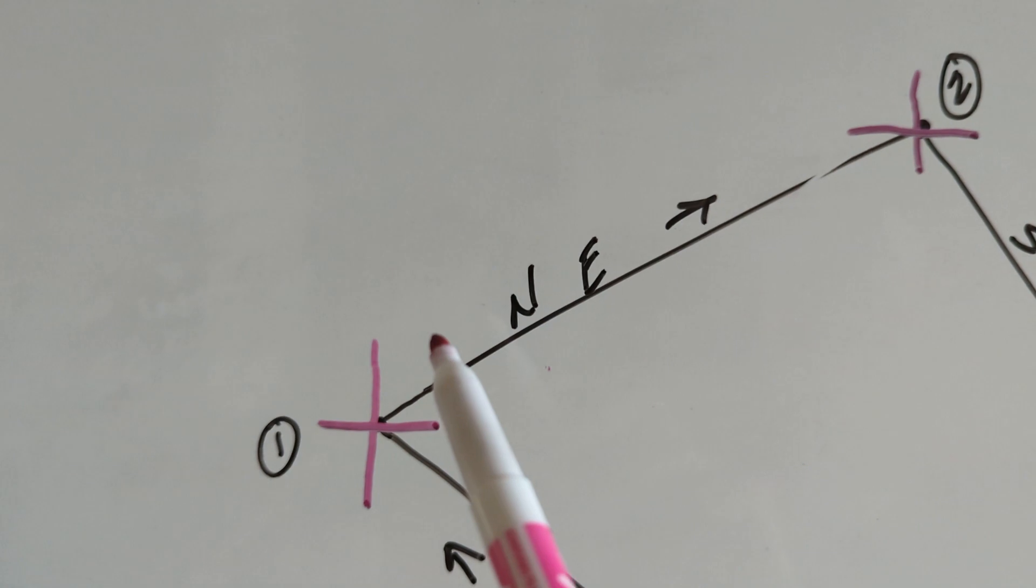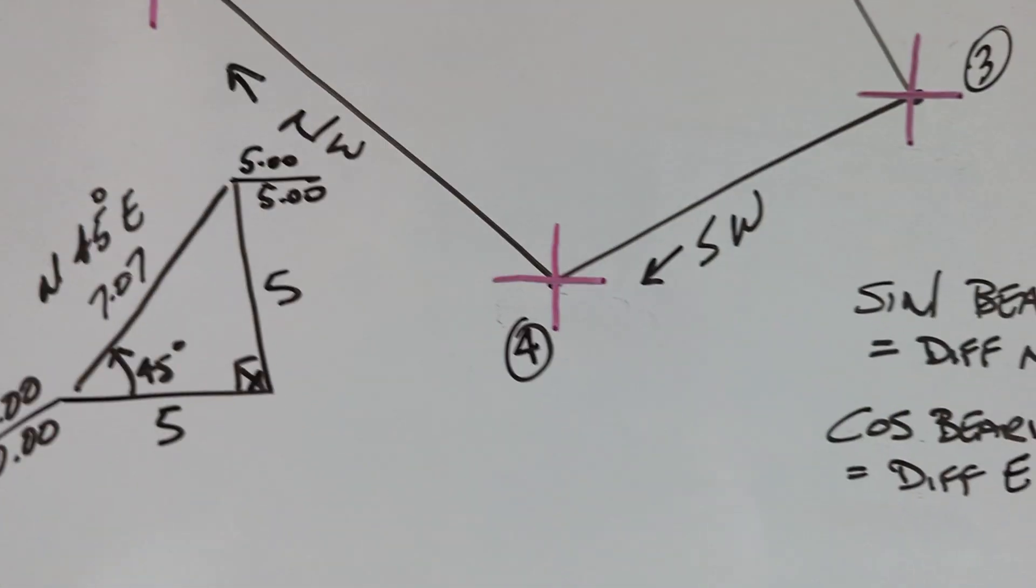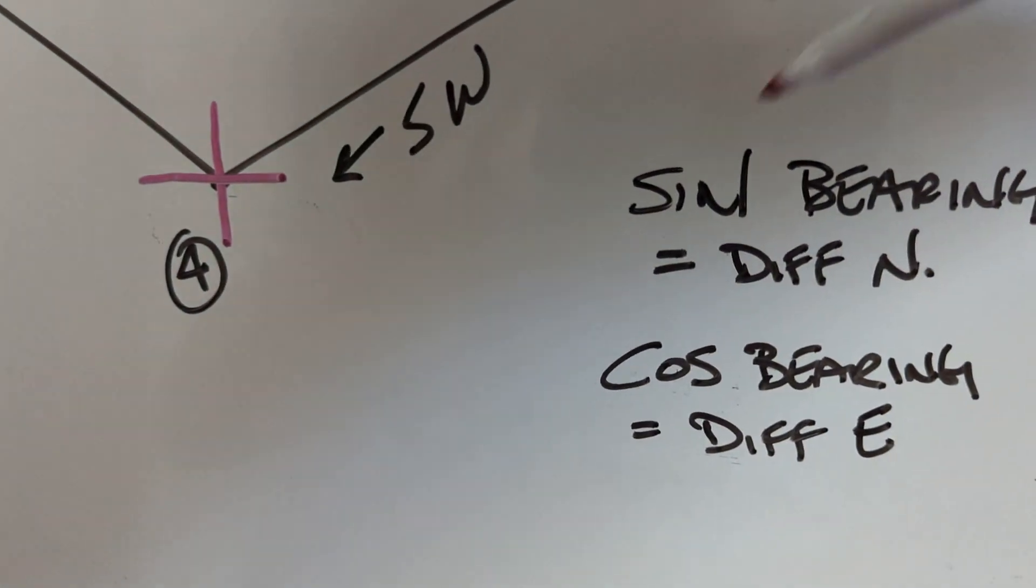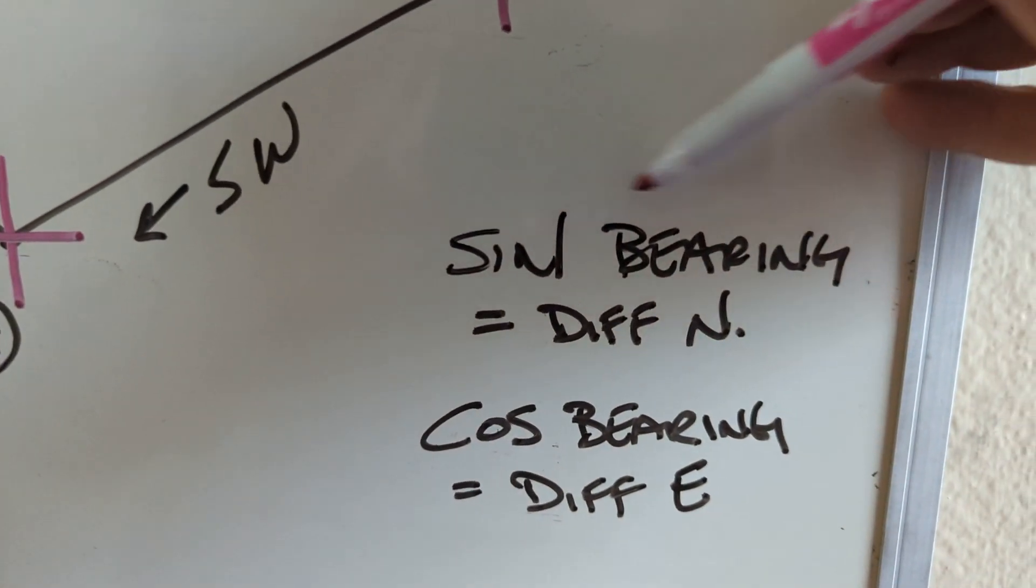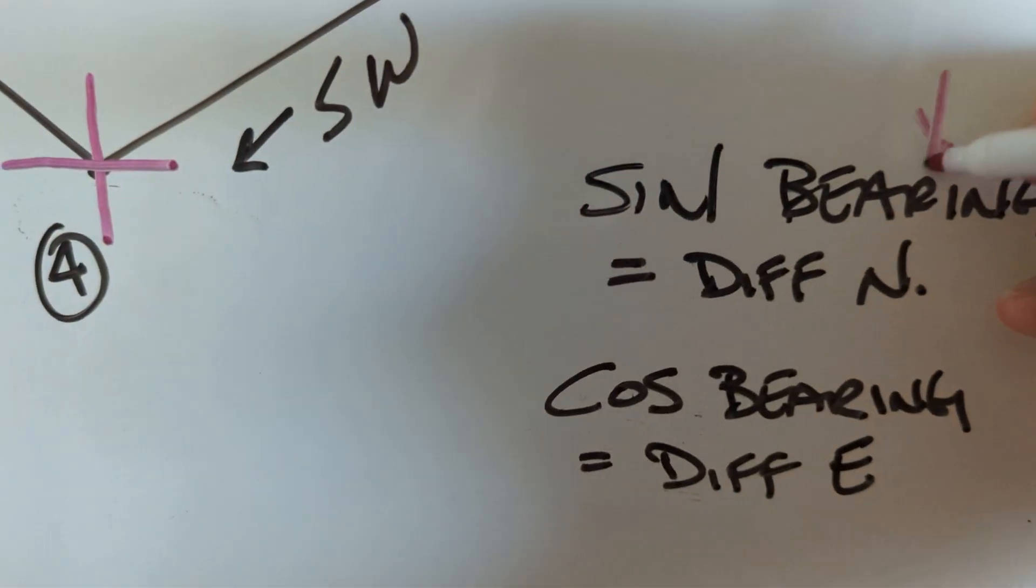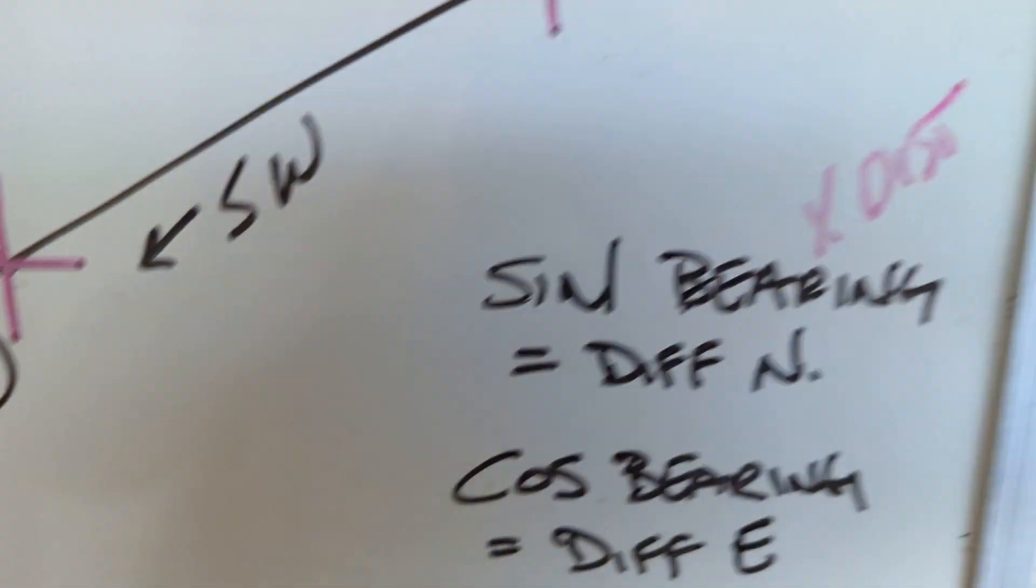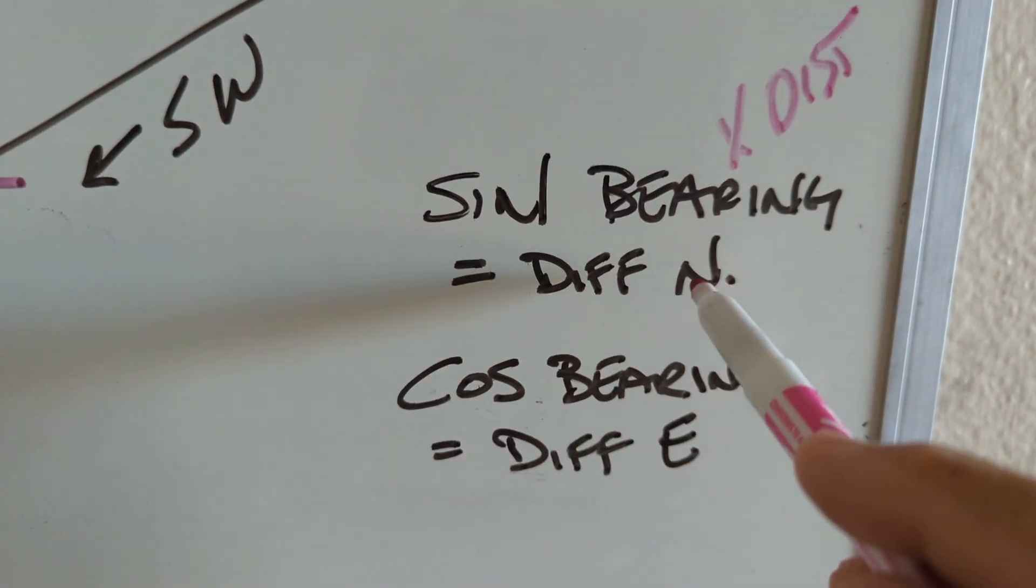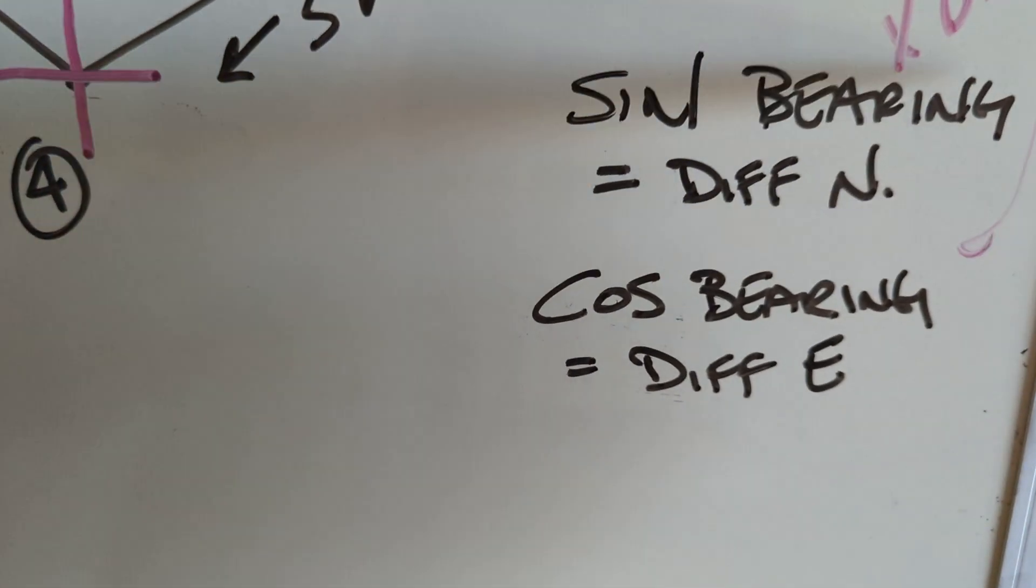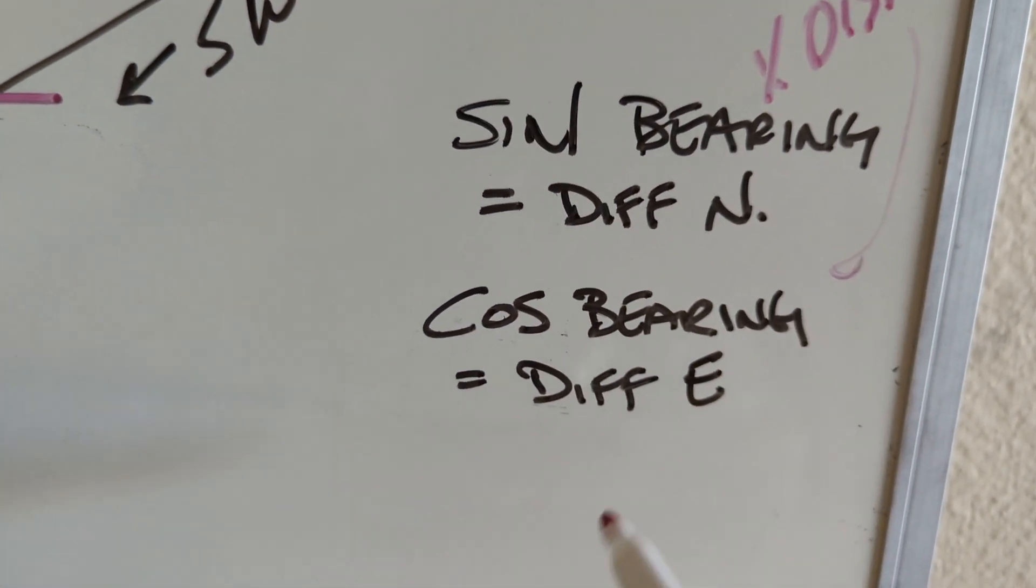So what I was trying to show him is when I went to school, we learned that it's the sine of the bearing times the distance. That's what I forgot to put on there. Times the distance. Times the distance equals the difference in the northing. And then the cosine of the bearing times the distance equals the difference in the easting.